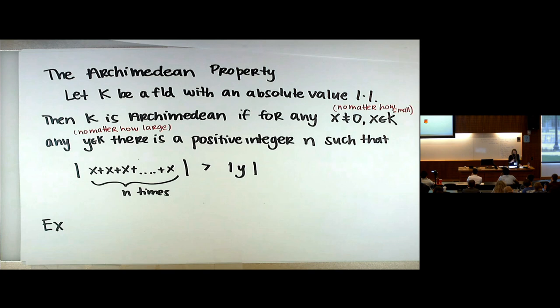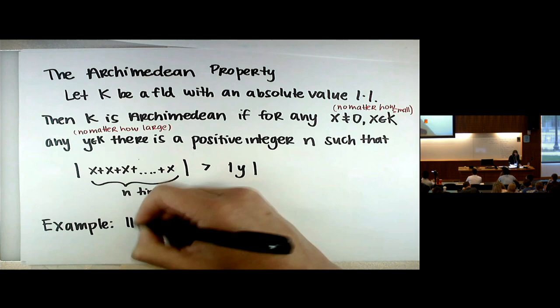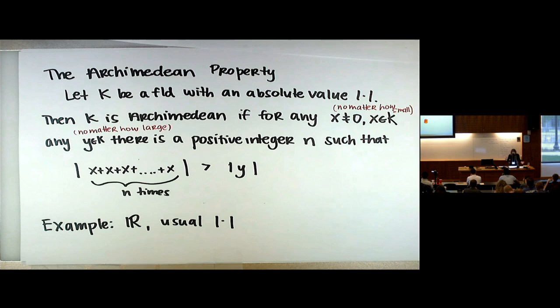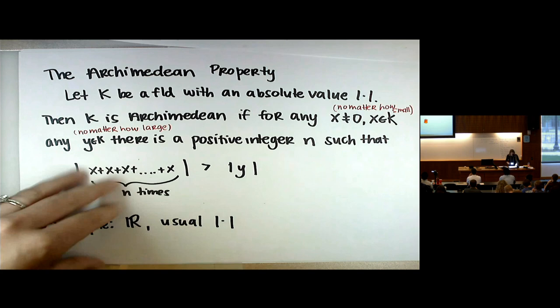A good example of an Archimedean field is the real numbers with the usual absolute value. Even if X is 1/1,000,000 and Y is 1,000,000, you just add X to itself enough times to exceed Y — probably about a million times squared. That's how life usually works. And today we are here to talk about when this does NOT happen.